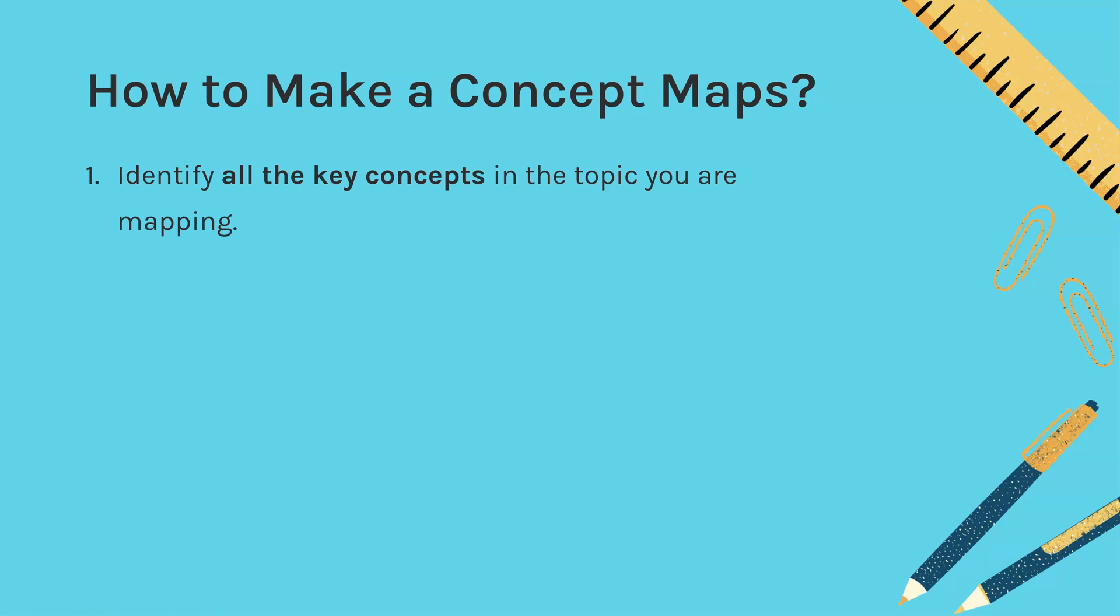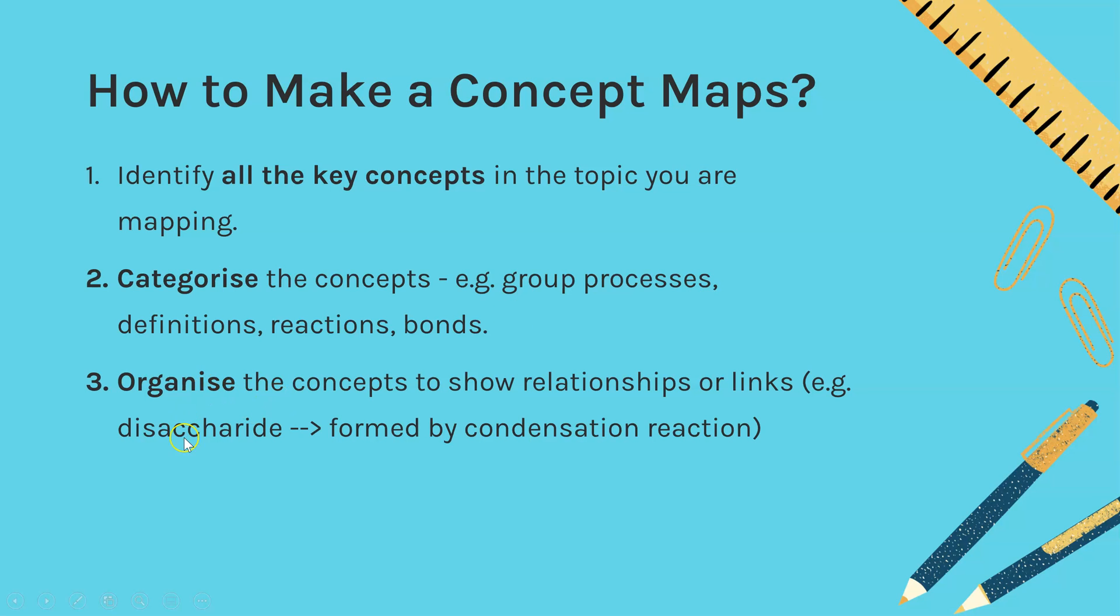So how do we make one then? I'm going to split it into these four steps and then I'm going to walk you through one that I have made. You need to pick a topic first of all, and depending on how big you're making this concept map, if it's going to be a small one, you might just want to have a tiny topic. If it's going to be a really big one, it might be one whole unit. So the first thing is identify all of the key concepts and key terms within that topic. Step 3 is categorize the concepts. And that could be according to whether they're processes, definitions, reactions, bonds. Then we need to organize the concepts to show these links and relationships, which is the key idea of concept maps.